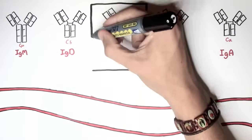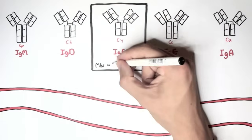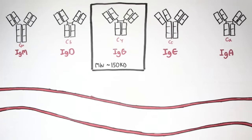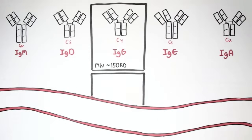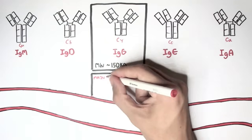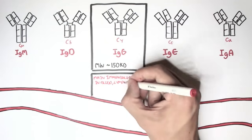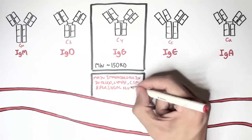Now we will first focus on IgG. IgG has a molecular weight of 150 kilodaltons. We are focusing on IgG first because it is the main immunoglobulin in the blood, lymph, cerebrospinal fluid,